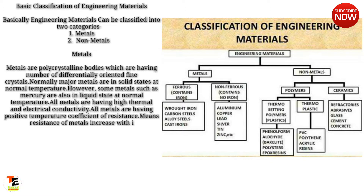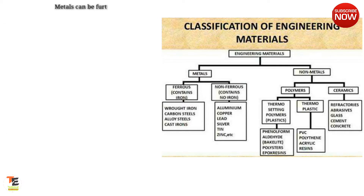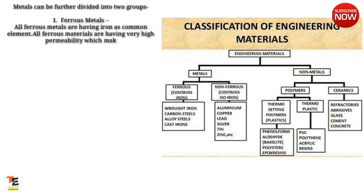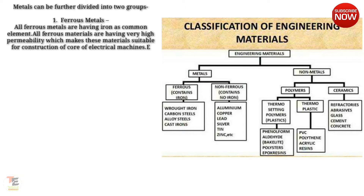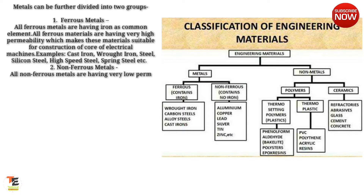All metals have a positive temperature coefficient of resistance, meaning resistance of metals increases with increase of temperature. Examples of metals: silver, copper, gold, aluminum, iron, zinc, lead, tin, etc. Metals can be further divided into two groups. One: ferrous metals — all ferrous metals have iron as a common element. All ferrous materials have very high permeability, which makes these materials suitable for construction of cores of electrical machines.